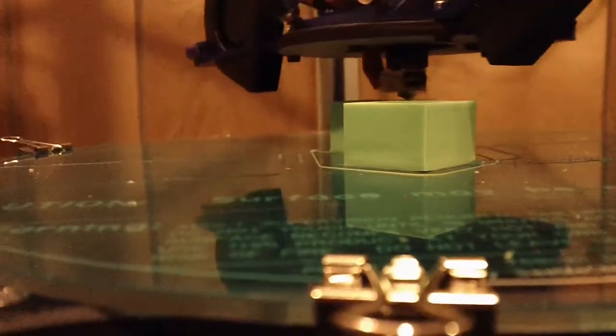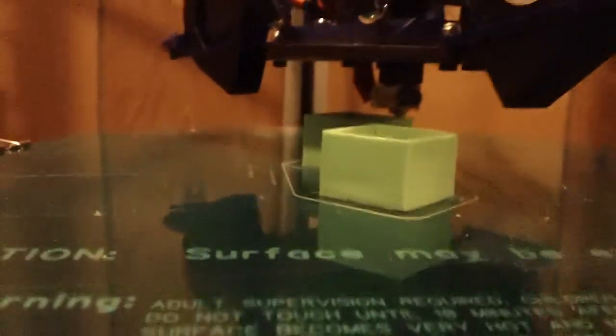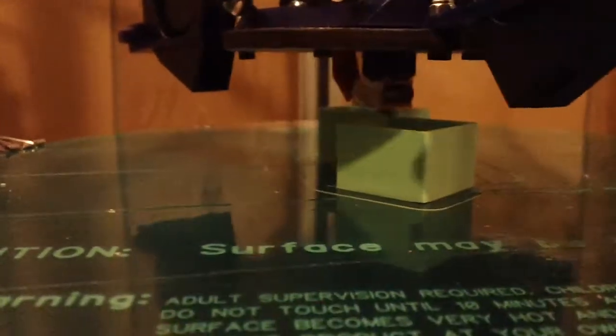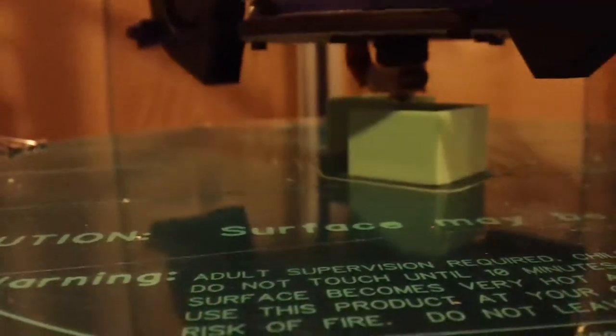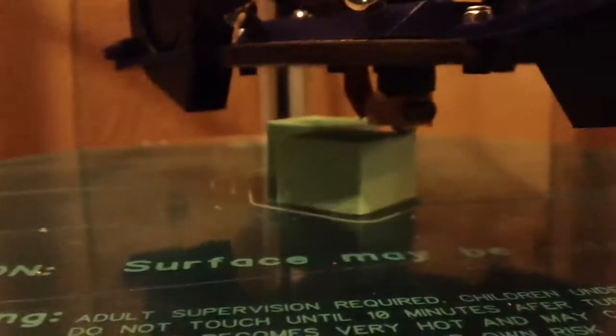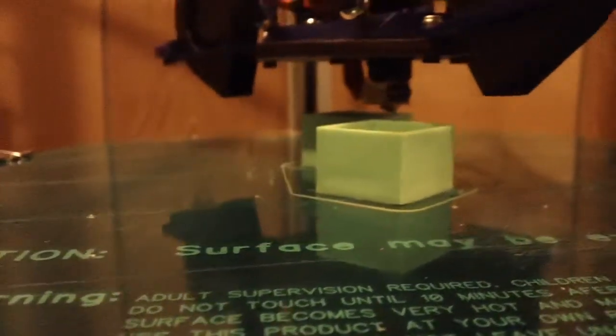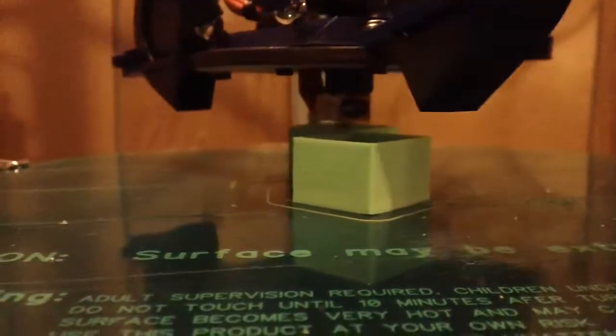As you can see, they're pretty straight. The layers look very good. The only issue I have now is tweaking retraction and priming between the boxes. There's a bit of stringing and it's not quite primed enough when it gets back to the next one. But that's easy enough to mess with and fix.